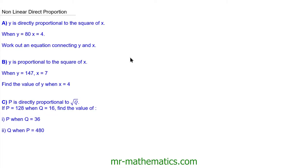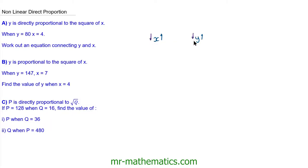Hello and welcome to our lesson on non-linear direct proportion. In this lesson we're going to consider two measurements, for instance an x measurement and a y. Because they're in direct proportion, this means that as one measurement, for instance x, increases, the other measurement y would also increase. Similarly, if x was to decrease, y would also decrease.